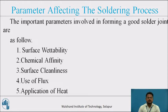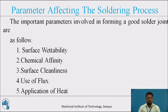Chemical affinity refers to the ease of formation of a solid solution or an inter-metallic compound between the base metal and the filler metal. If the chemical affinity is higher, the soldering joint will be stronger.